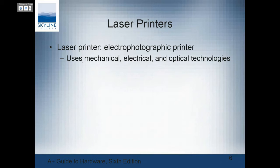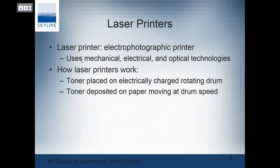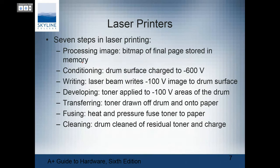The laser printer process: the toner is placed on an electrically rotating drum, then deposited on the paper. The seven steps are: processing, conditioning, writing, developing, transferring, fusing, and cleaning. When we were in here the other day, someone said the toner fell off the page — you know what that means? Toner fell off the page means the fuser is not working. The heat and pressure actually melts the letters onto the paper.